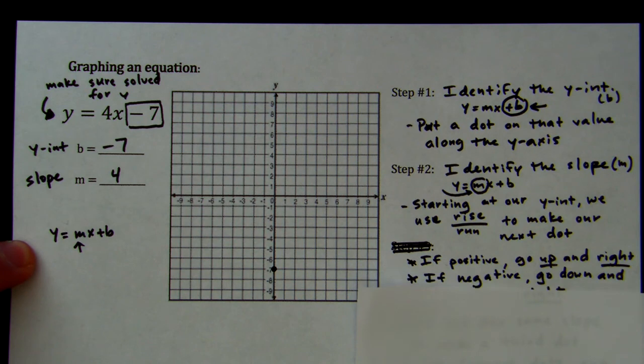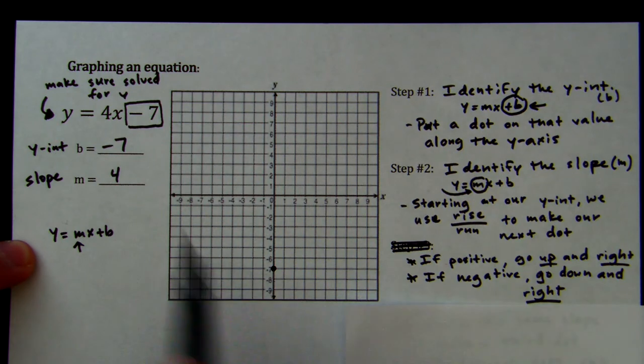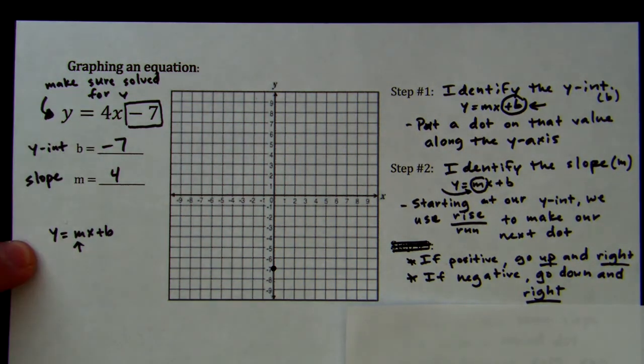Here's a little hint slash cheat sheet. And this doesn't always work, but it usually works most of the time. If your slope is positive, you start by going up your rise amount, and then to the right your run amount. If the slope is negative, you go down the rise amount, and then right the run amount. So, positive, we start up.